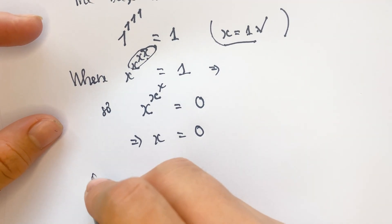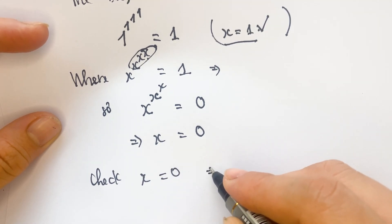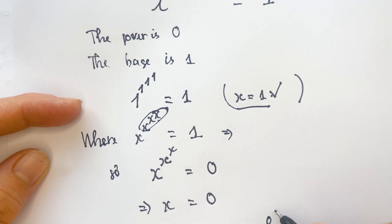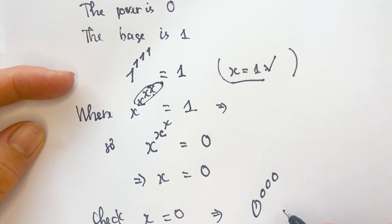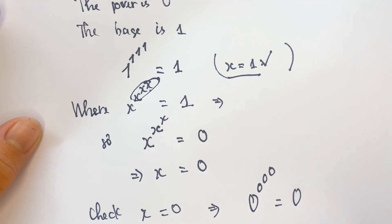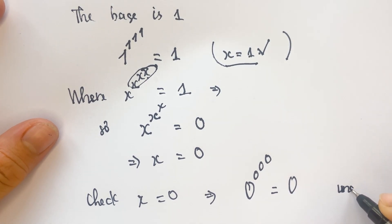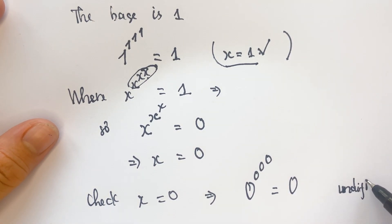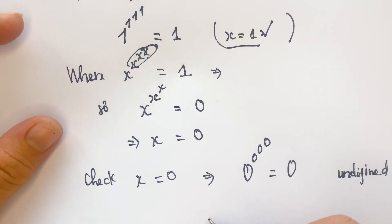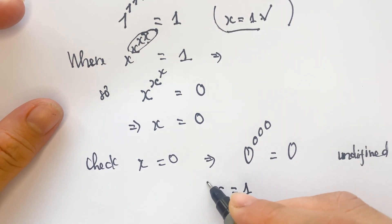Let's check x = 0. We see that 0 power 0 power 0 power 0 equals 0, but this is undefined. Therefore, x = 0 is not a valid solution.